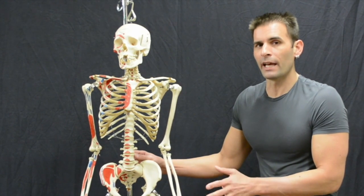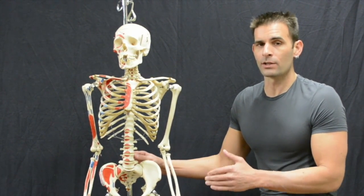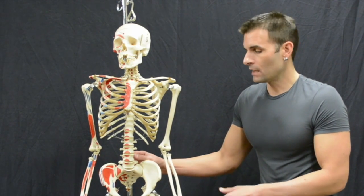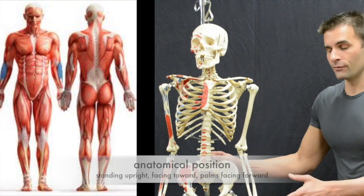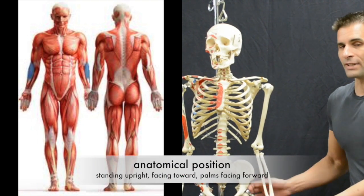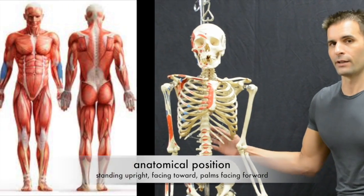First thing we want to establish is what is anatomical position, because that is what all sections and directions are derived off of. Anatomical position is standing feet flat, facing forward, and palms out so that your thumbs go to the outside. That is considered anatomical position.